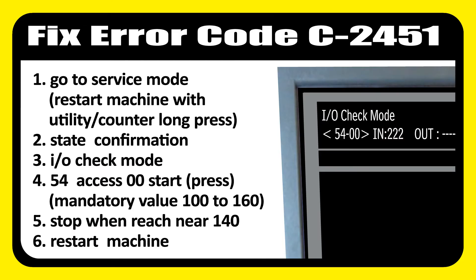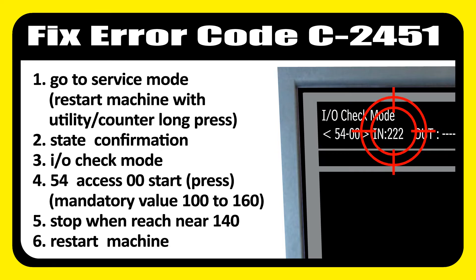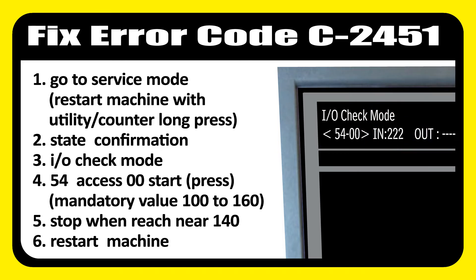Now we know how to fix this error. Simply start the machine with long press utility/counter, then select state confirmation, then select IO check mode, then press 54 access 00 and press start. Stop when it reaches near 140. The mandatory value is 100 to 160. After reaching the mandatory value, restart the machine.